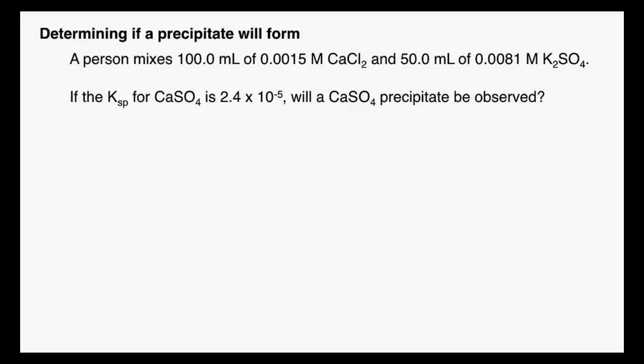Any time you're trying to determine if a precipitate will form, you're going to have to calculate the Q and compare it to the Ksp. If the Q is greater than the Ksp, then you know that a precipitate will form. If the Q is less than the Ksp, you know that it's going to dissolve completely.